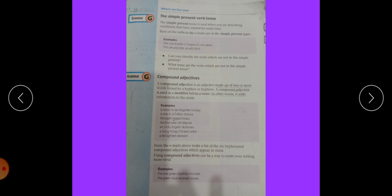Next point is compound adjectives. A compound adjective is an adjective made up of two or more words linked by a hyphen or hyphens. A compound adjective is used as a modifier before a noun. In other words, it adds information to the noun. Hyphen means the sign used to join words, indicate that they have combined meaning or that they are linked in the grammar.